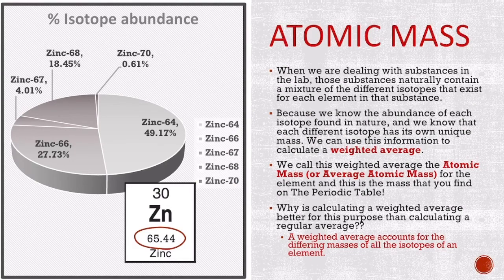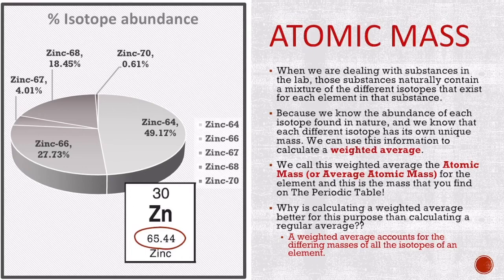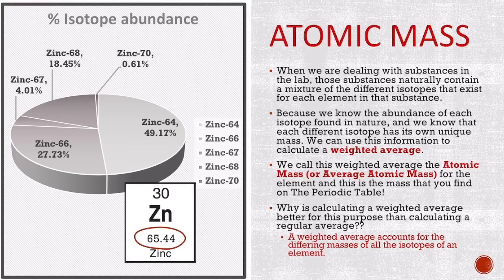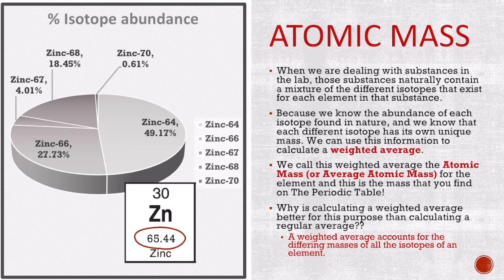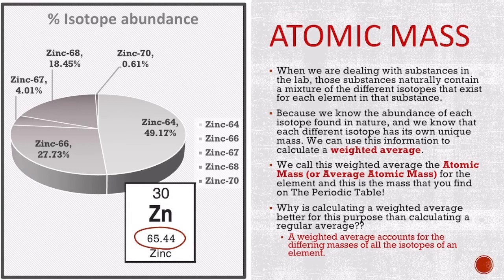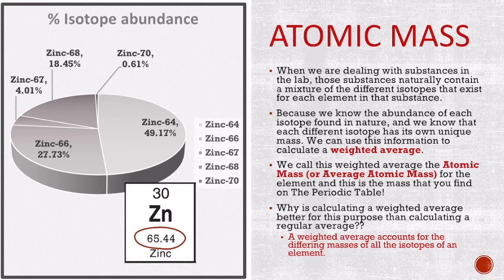You do have to know how to calculate the atomic mass or average atomic mass. When we're dealing with substances in the lab, those substances naturally contain a mixture of all the different isotopes that exist for each element in that substance. Because we know the abundance of each isotope found in nature, and each isotope has its own unique mass, we can calculate a weighted average. This weighted average is called the atomic mass, or the average atomic mass for that element, and it's the number that shows up as the mass number on the periodic table.